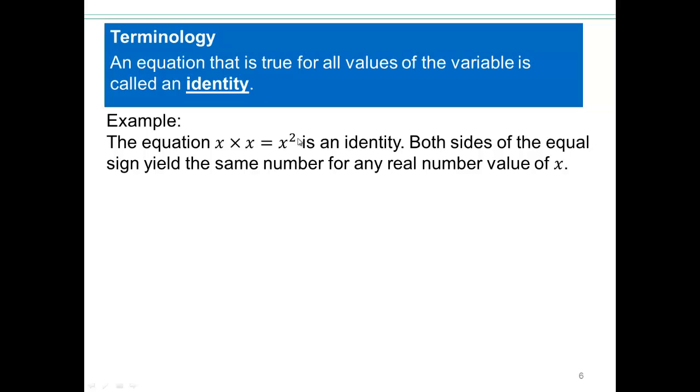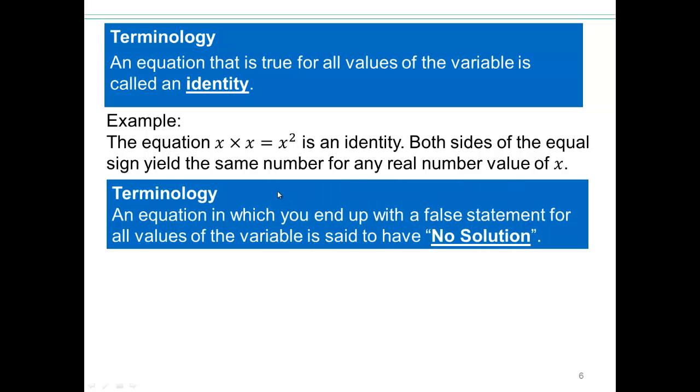No matter what number you put in here, like 2 times 2 is 2 squared because 4 equals 4. Any number you put in here, this is always going to be a true equation. So this is an identity. An equation in which you end up with a false statement no matter what value of the variable you put in is said to have no solution.